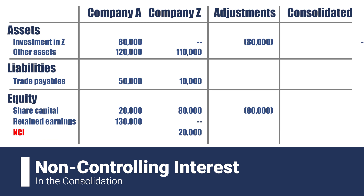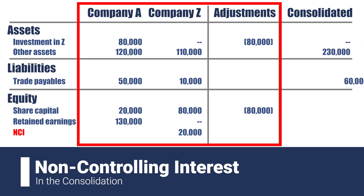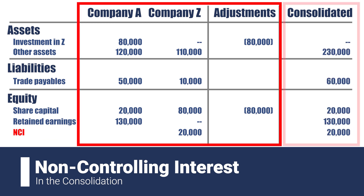Finally, we add all these things together to form the consolidated financial statements of Company A. With this, you see the practical application of the definition: the NCI is the part of the subsidiary's equity — in this case, the remaining 20% of shares owned by B — not directly or indirectly attributable to the parent company, in this case Company A.